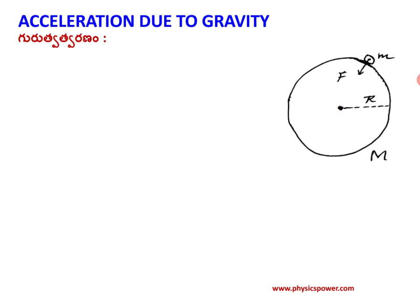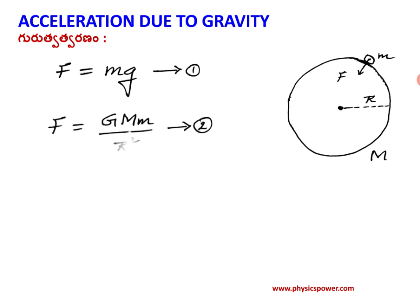The force applied on the small mass body m due to Earth gives F equals mg. Similarly, according to Newton's law of gravitation, the attractive force between any two mass bodies M1 and m1 separated by distance R is directly proportional to the product of the masses and inversely proportional to the square of the distance. So F equals G times M times m divided by R squared. Here capital G is the universal gravitational constant, which is constant everywhere, and small g is the acceleration due to gravity.